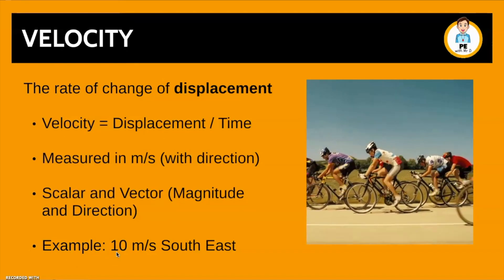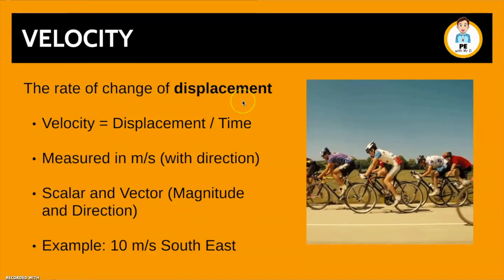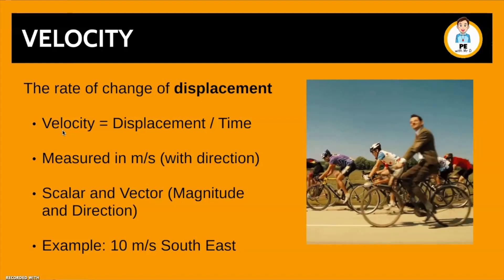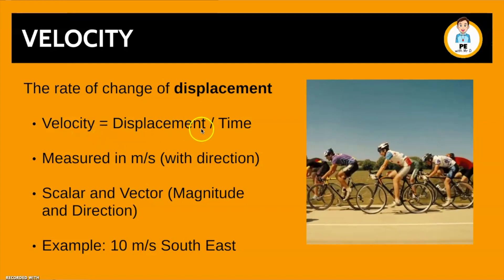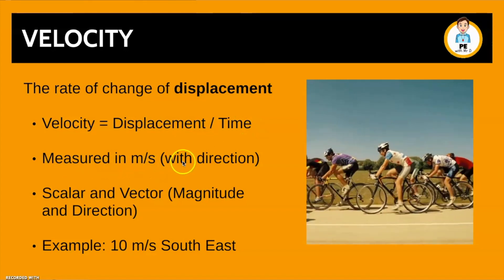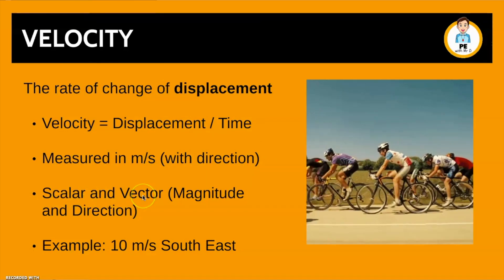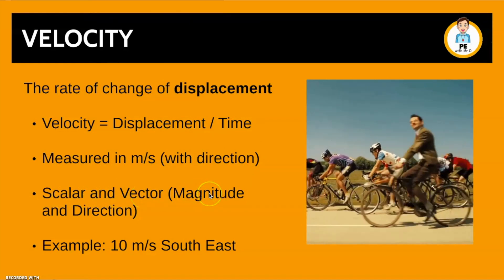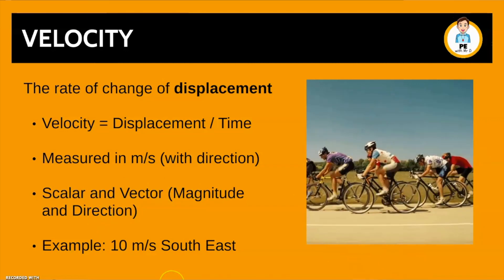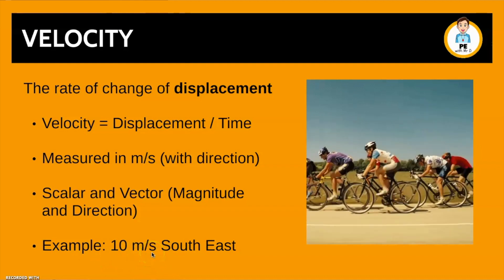Another relevant concept is velocity, which is the rate of change of displacement. It uses exactly the same formula as speed, except velocity equals displacement divided by time. It is measured in metres per second with a direction, and it is a vector quantity, meaning it has both magnitude and direction. So we might say Mr. Bean is riding at 10 metres per second south east.